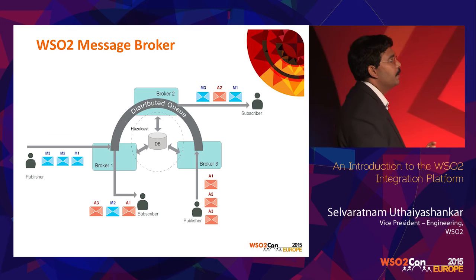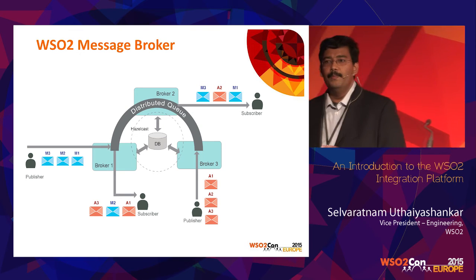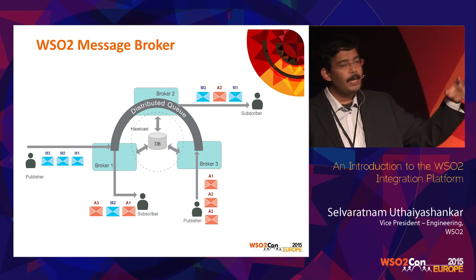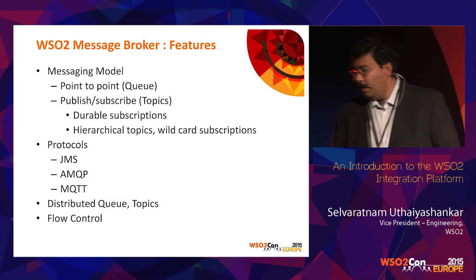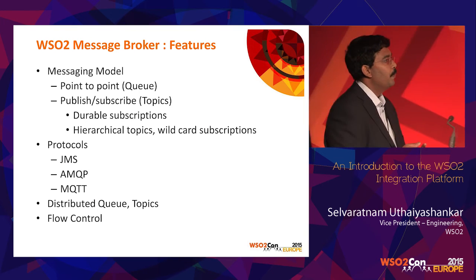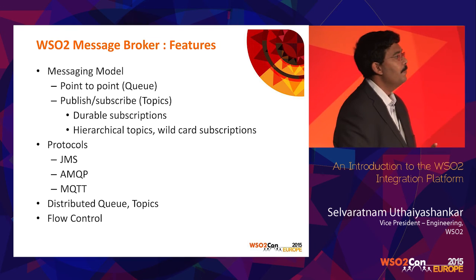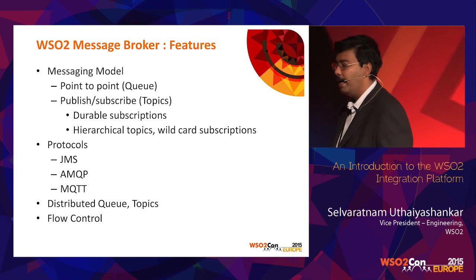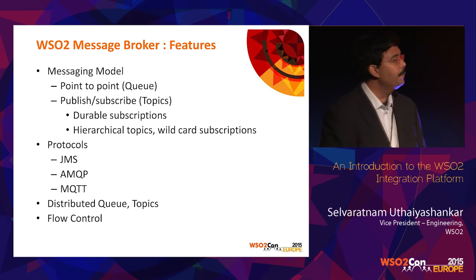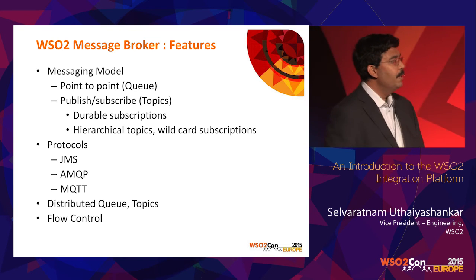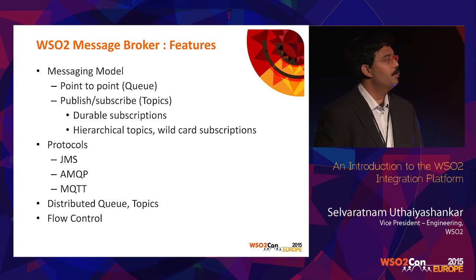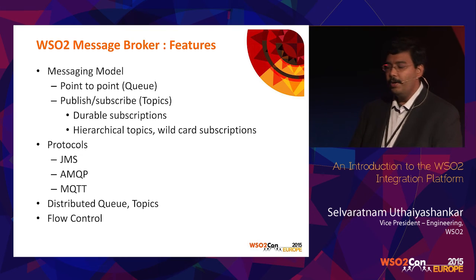The next product is the WSO2 Message Broker — a distributed message broker that allows you to connect multiple brokers together and provide a distributed queue. It provides both point-to-point and publish-subscribe messaging models. Publish-subscribe can be durable, and it supports hierarchical topics and wildcard subscriptions. From a protocol perspective, it supports JMS, AMQP, and MQTT. There will be another talk going into more details on the Message Broker.